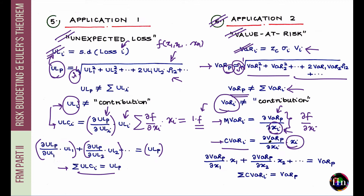Euler's theorem tells us that for a function homogeneous with degree 1, summing all component VARs gives the total portfolio VAR. So component VAR is a valid contribution measure for the ith sub-portfolio. If you thought these contributions summed to the total by coincidence, they don't — they sum up because we are dealing with homogeneous functions of degree 1, and Euler's theorem guarantees that these contributions across all risk factors sum to the total.